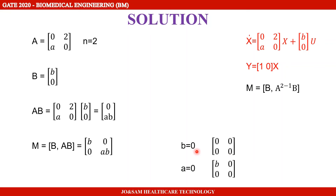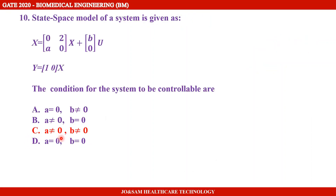Next, suppose A equals 0. Then A·B equals 0, making the second row, second column entry 0. The rank of the matrix becomes 1, which is not equal to the order of the matrix, which is 2. So A also should not be equal to 0. Therefore, for the state space model to be controllable, both A not equal to 0 and B not equal to 0 are required. The answer is Option C.